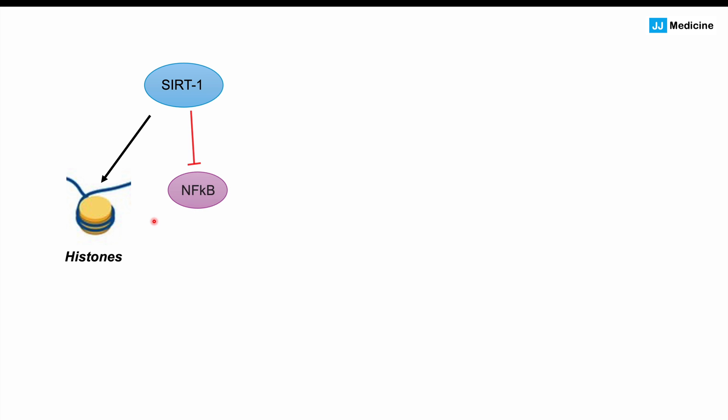Another important target of SIRT1 is nuclear factor kappa B, or NF-kappa B. SIRT1 inhibits NF-kappa B by deacetylating it, reducing its transcriptional activity. This leads to reductions in certain genes that NF-kappa B transcribes — many of which are involved in inflammation — resulting in anti-inflammatory effects.